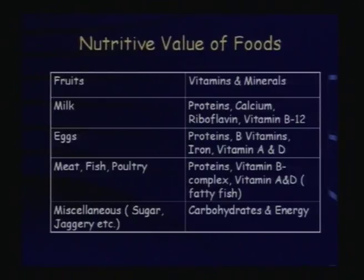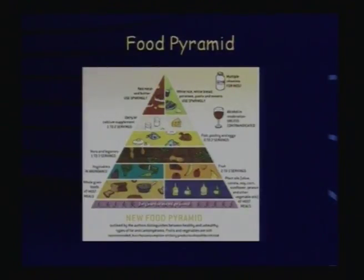Some foods like sugar and jaggery are good sources of energy but do not provide minerals and vitamins. The food pyramid gives a guideline on how to choose foods and in what proportions. At the base is daily exercise and weight control — we should start exercising before choosing foods. Moving up, whole grain foods and olive oil are important. At the top are red meat and butter, which should be taken in smaller amounts. Multiple vitamin tablets may also be considered, but a food-based approach is preferred.